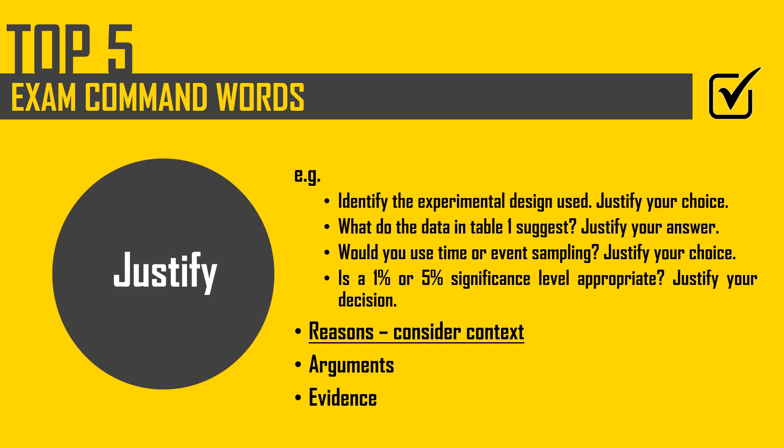Number 5 is 'justify'. Here you need to explain why you've made a certain decision or why the answer is a certain way. Look out for this particularly in research methods, asking you to explain choices if you're designing an experiment, or if you have identified something from a scenario and you're having to explain why it is that particular type of experiment or design.